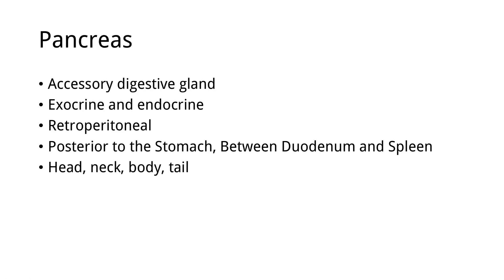Let's talk about the pancreas. The pancreas is an accessory digestive gland. It has both exocrine and endocrine functions. The exocrine function is the secretion of pancreatic juice from the acinar cells, and the endocrine function is the secretion of glucagon and insulin from the islets of Langerhans. We will see both of them at the histology of the pancreas.